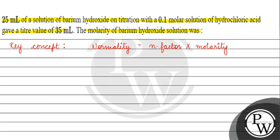Now, if we see the reaction of barium hydroxide with HCl: barium hydroxide reacts with 2 moles of HCl to form barium chloride and 2 H₂O.